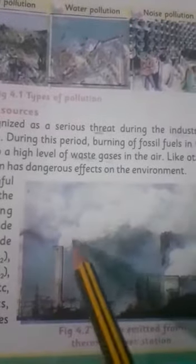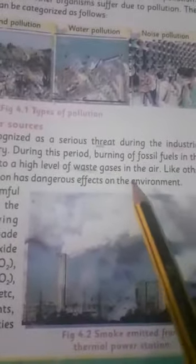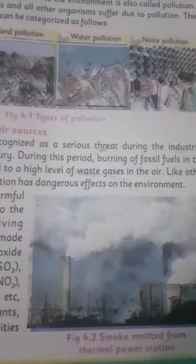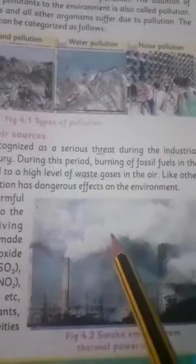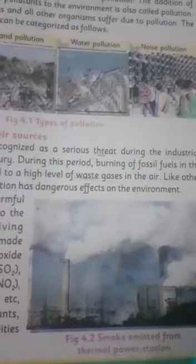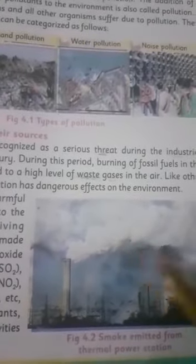Air pollution ke dauran jo harmful pollutants hote hain — as you can see from this picture — they are released into the air from factories. Ab ye jo pollutants hote hain jo hamare air ko ganda kar dete hain, air pollution bana dete hain — these can harm all living organisms including plants, animals, and aquatic animals. It may be man-made or natural.